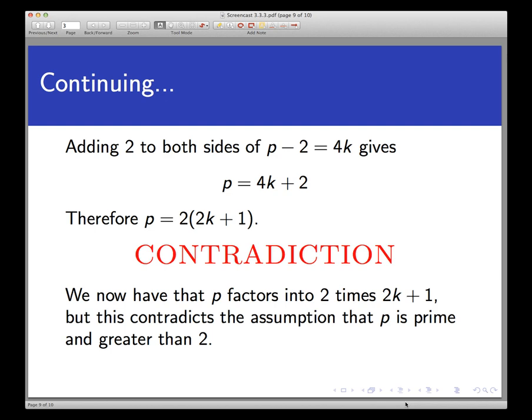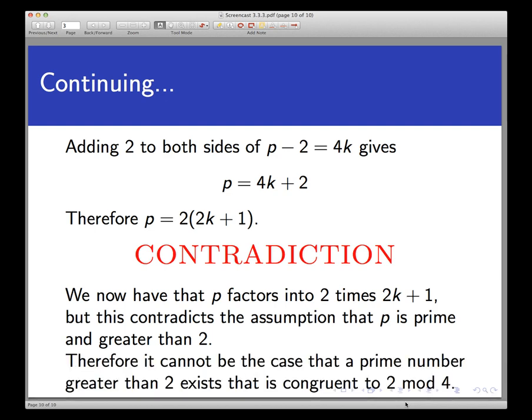And let's ask, as we always do, what got us to this contradiction in the first place? Well, it was the assumption that there does actually exist a prime number bigger than 2 that's congruent to 2 mod 4. So the assumption that we made there causes a contradiction. And so it must be the case that those prime numbers cannot exist. So in other words, we've proven what we wanted. We've proven that no prime number can be congruent to 2 mod 4.